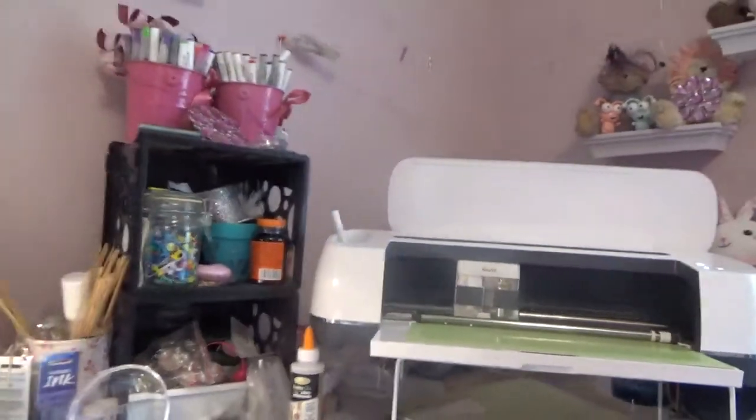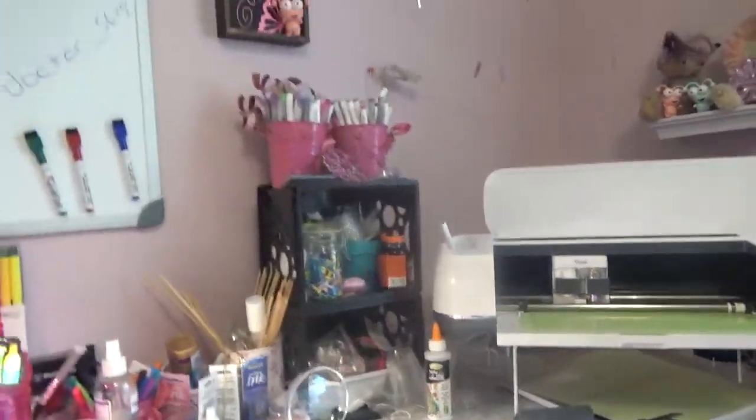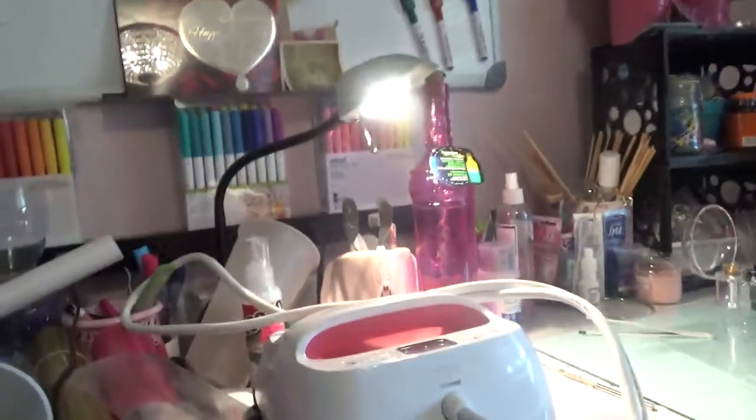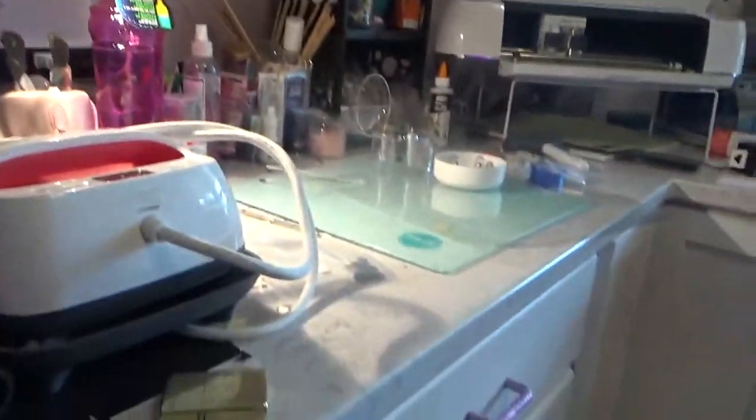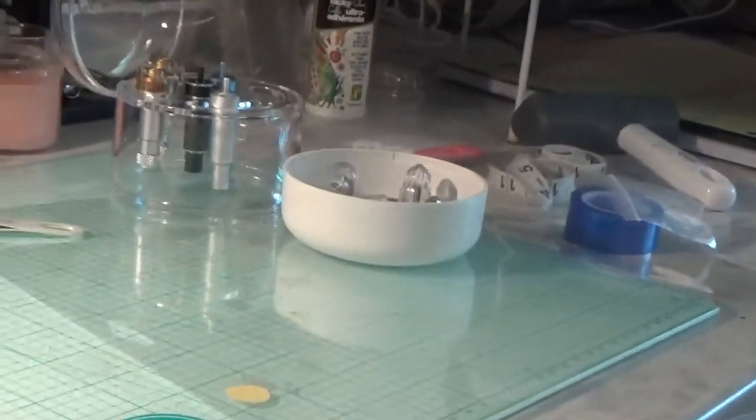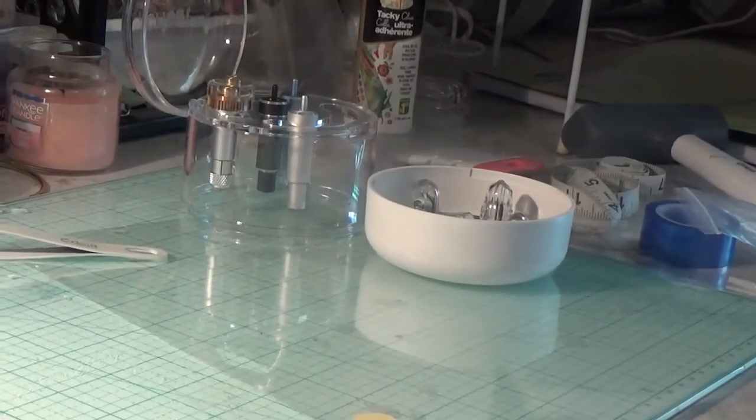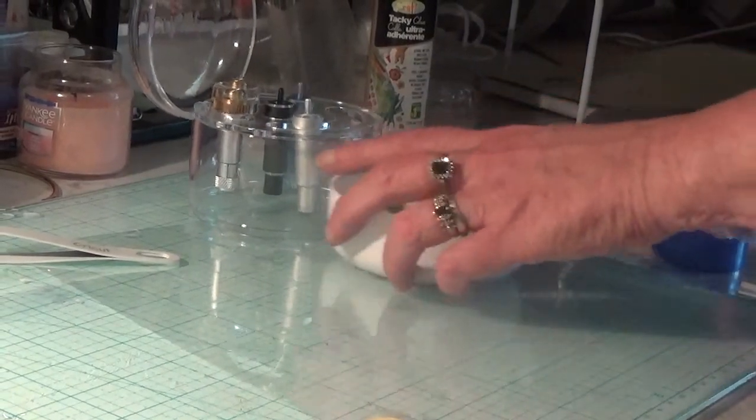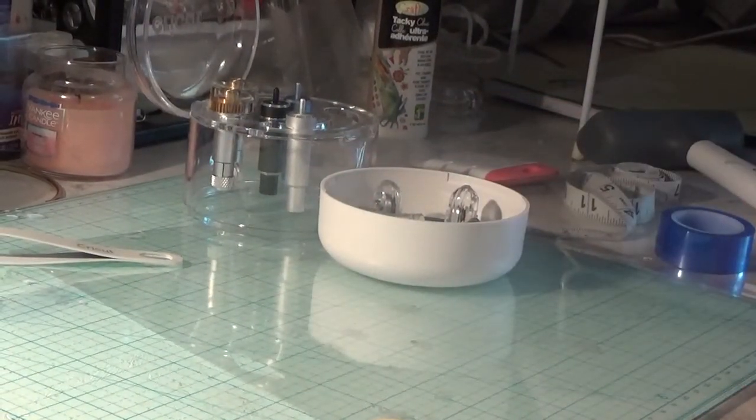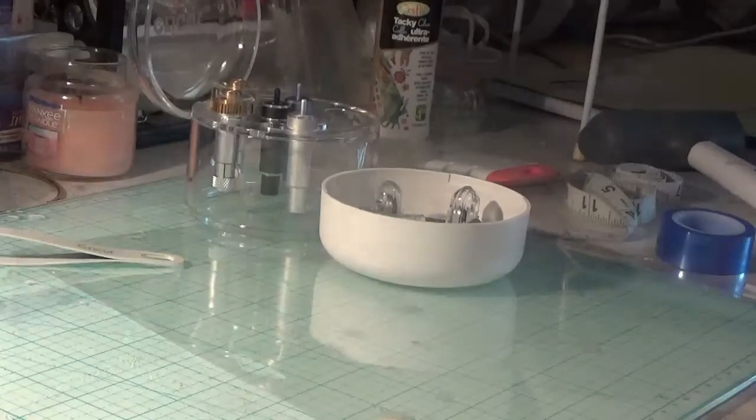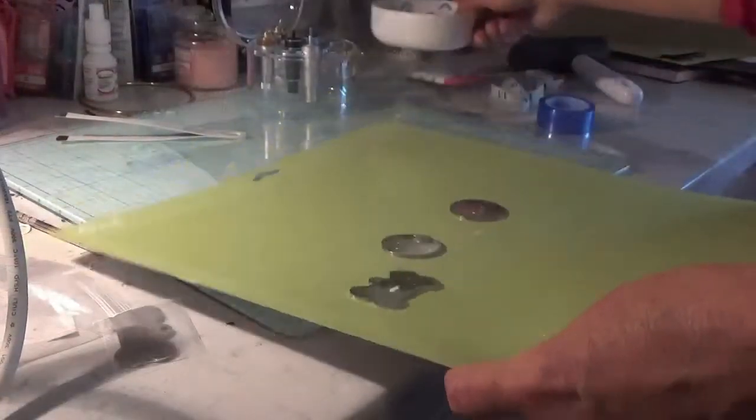Okay, it's all done. It's telling you to change it to the knife blade, of course we don't want to do that. Move, Yogi please, my dog is in the way. So of course we're not going to set it to the knife. It says to set it to the knife blade now but we don't want to do that because we're not cutting out the shapes. So we're just going to unload the mat. Okay, so let's see what we got going on here.